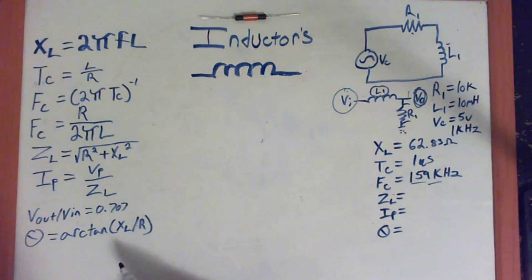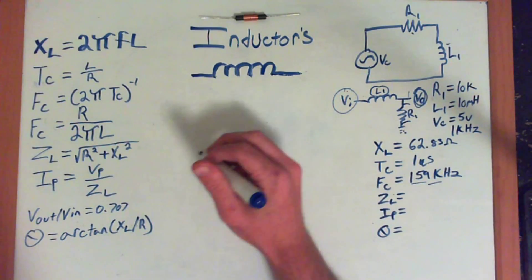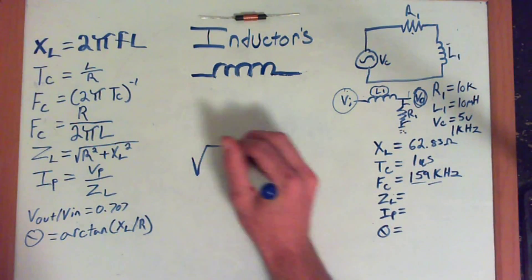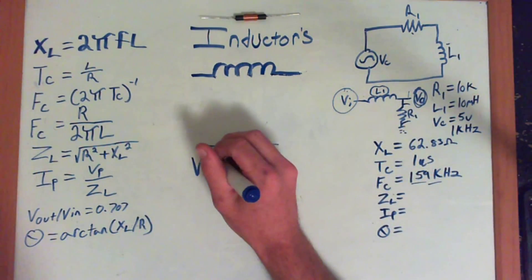The impedance of the circuit, though, can be expressed, and impedance is expressed in ohms. So, it's the square root of the resistance squared and the XL squared. We already have the XL, and we have the resistance, so let's solve.